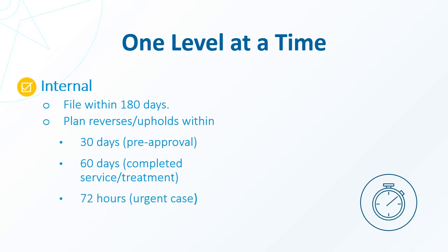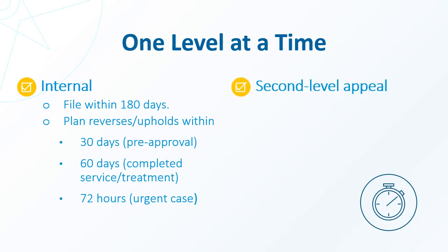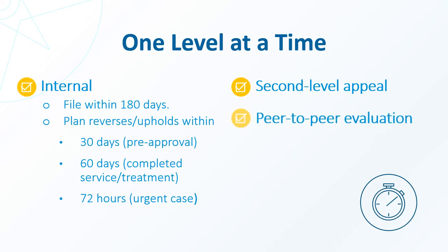If your appeal is denied, most plans allow for a second-level appeal, which can be an external or an additional internal review, depending on the type of the plan. Sometimes, an insurer will conduct a peer-to-peer evaluation, in which your provider will speak with a medical professional associated with the insurance company to determine whether the service or therapy is medically necessary.